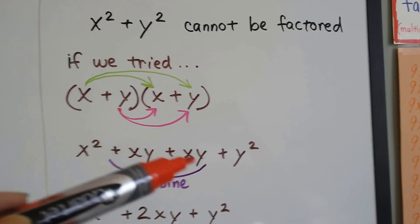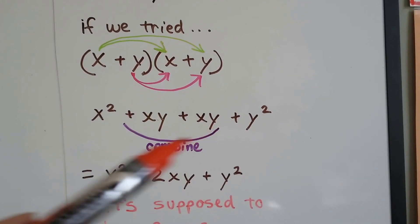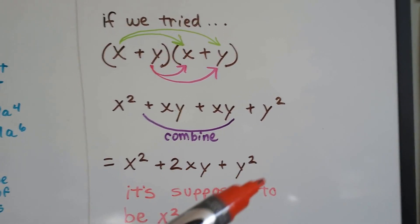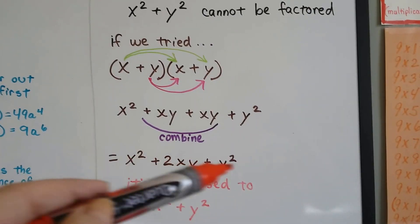And then we'd have y and y, that would be y². When we combine these like terms, we end up with x²+2xy+y². Well, that's not x²+y². That's completely different. It gave us a trinomial.